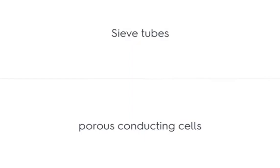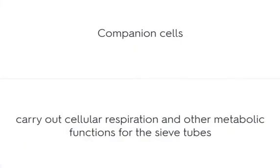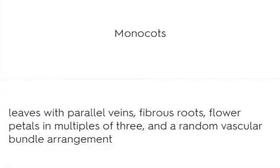Sieve tubes are porous conducting cells. Companion cells carry out cellular respiration and other metabolic functions for the sieve tubes. Monocots have leaves with parallel veins, fibrous roots, flower petals in multiples of 3, and a random vascular bundle arrangement.